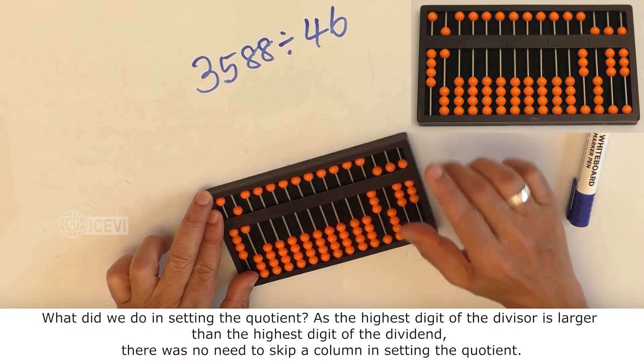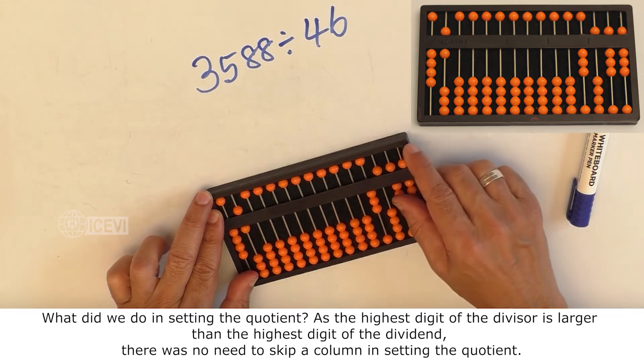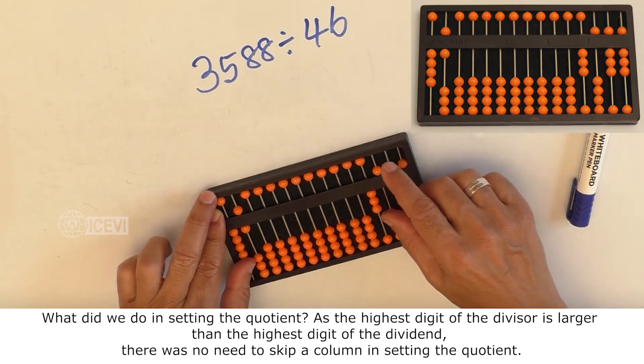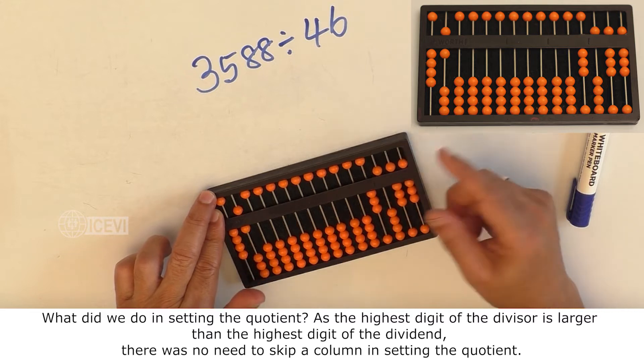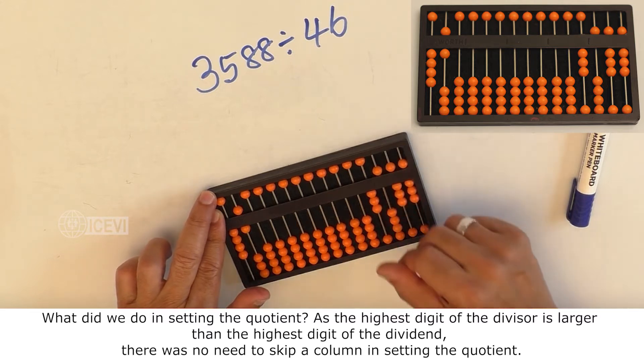What did we do in setting the quotient? As the highest digit of the divisor is larger than the highest digit of the dividend, there was no need to skip a column in setting the quotient.